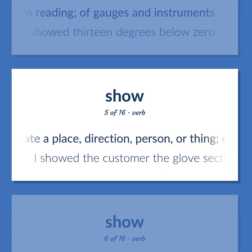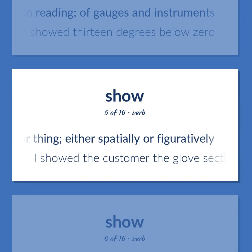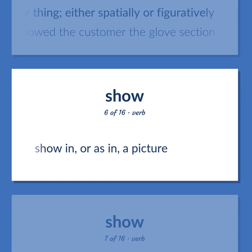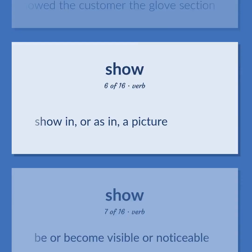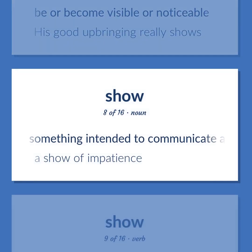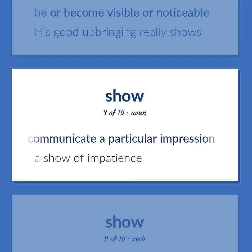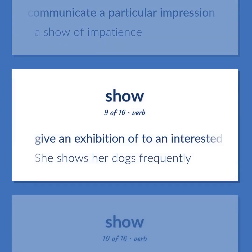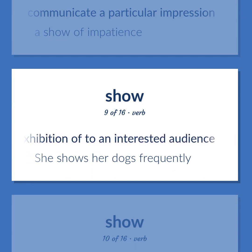Indicate a place, direction, person, or thing, either spatially or figuratively — I showed the customer the glove section. Show in, or as in, a picture. Be or become visible or noticeable — his good upbringing really shows. Something intended to communicate a particular impression — a show of impatience. Give an exhibition of to an interested audience — she shows her dogs frequently.